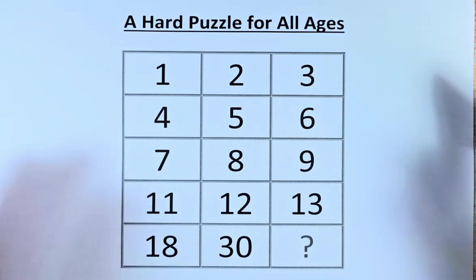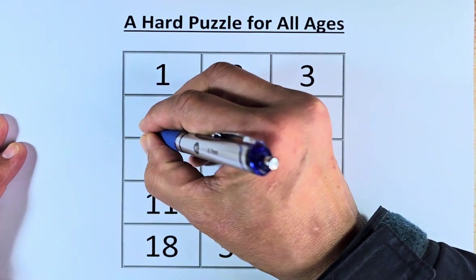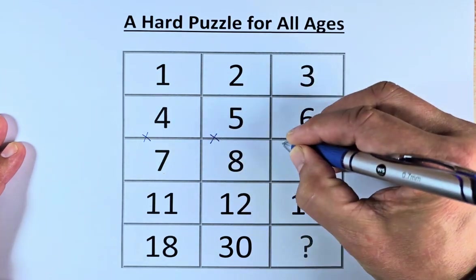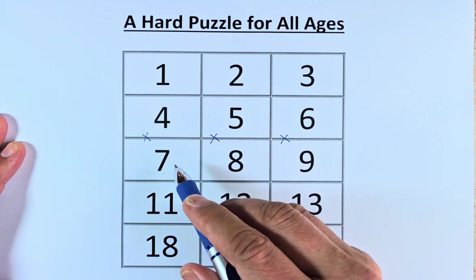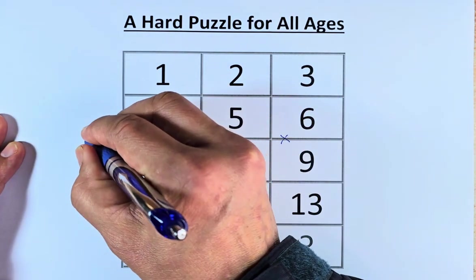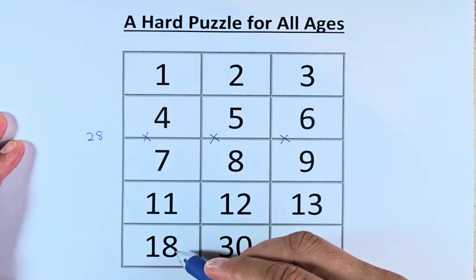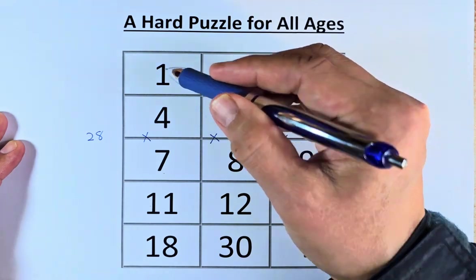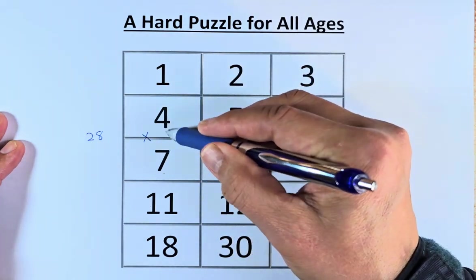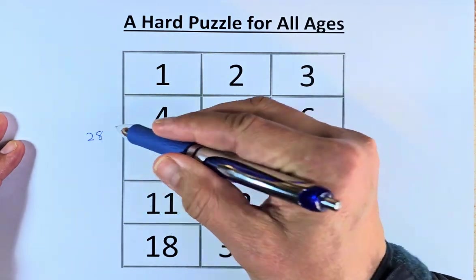So this is the solution. What we're going to do, we're first going to multiply the middle numbers. We're going to multiply 4 by 7, so that will give us 28.